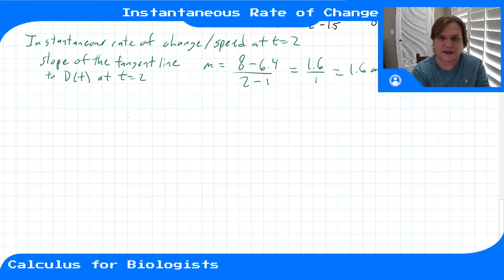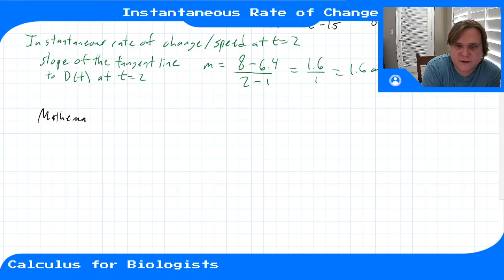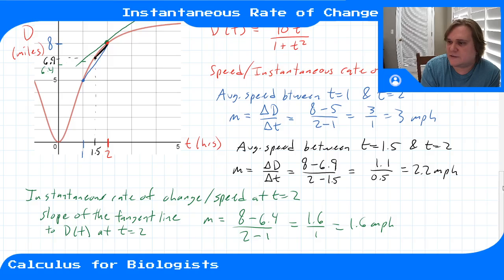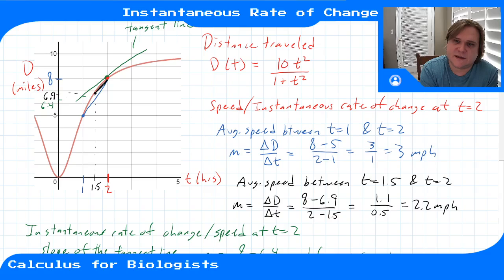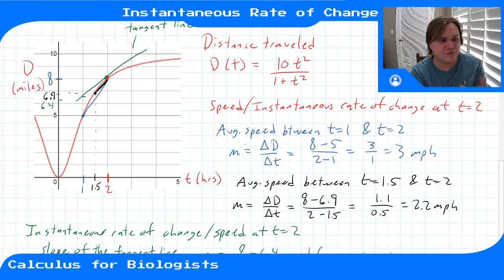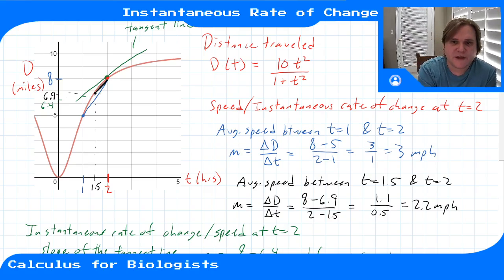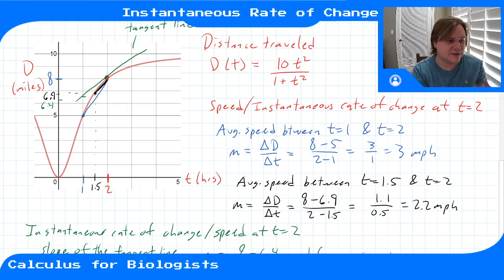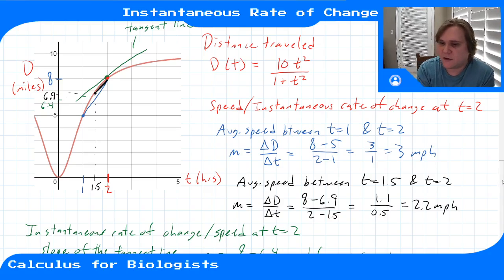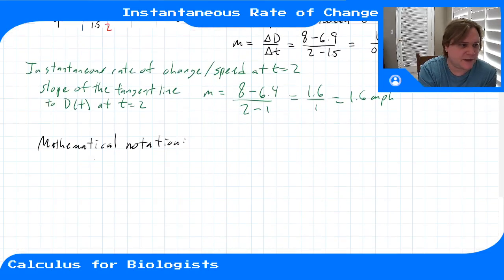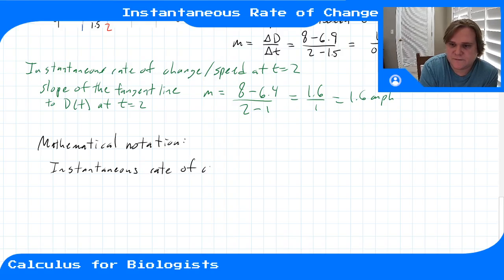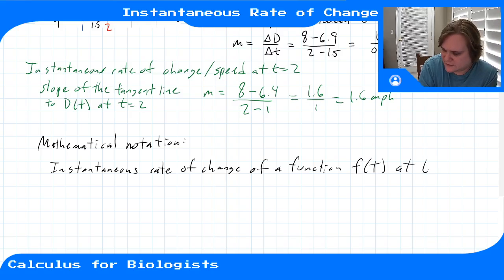We'll get into more formality in the next videos. The major mathematical notation for this process is defining what's called a limit. The instantaneous rate of change of a function at a point is the limit of those average rates of change up to that point — the limit of the slopes of those secant lines. Eventually that limit becomes the tangent line, so the slope of the tangent is the rate of change at that point. For the instantaneous rate of change of a function f(t) at t = t₀...